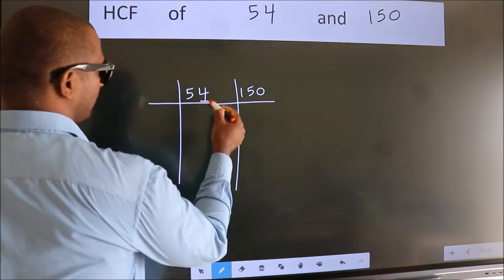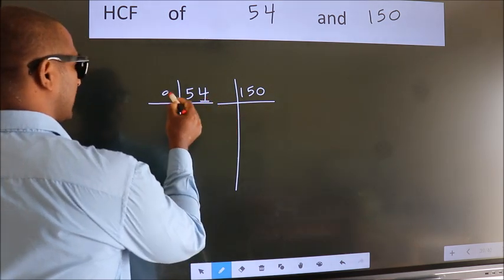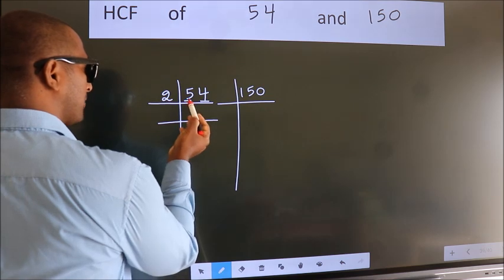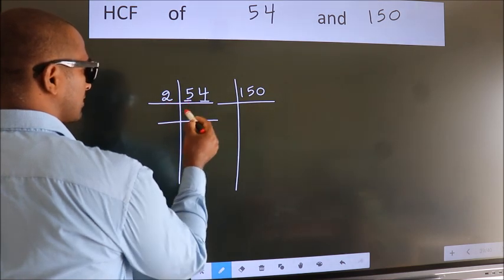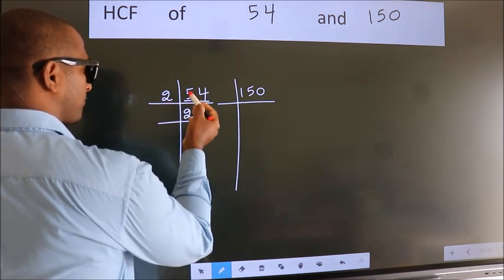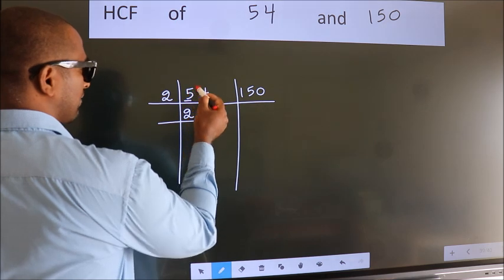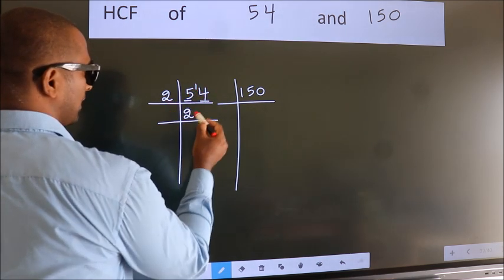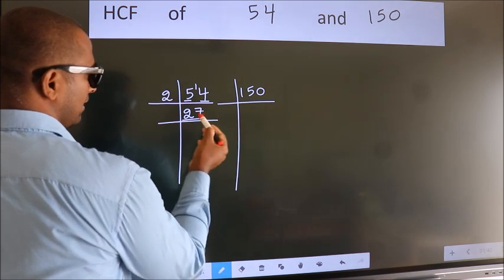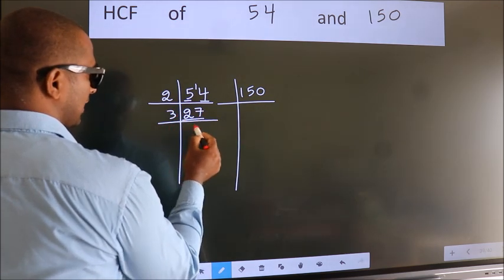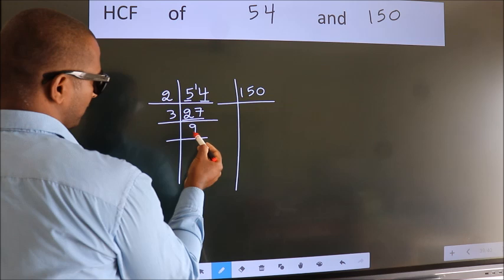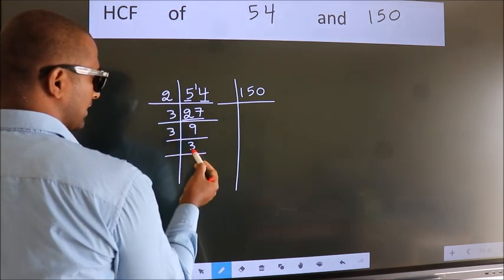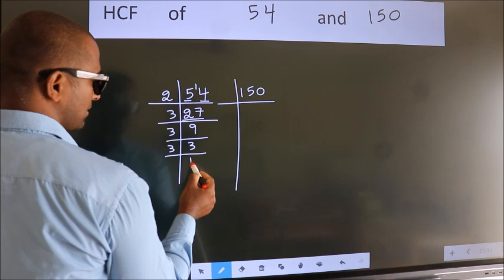Last digit 4, even, so take 2. First number 5. A number close to 5 in 2 table is 2 times 2 is 4. 5 minus 4, 1 carried forward 14. When do we get 14 in 2 table? 2 times 7 is 14. 27 is 3 times 9 is 27. 9 is 3 times 3 is 9. 3 is a prime number, so 3 times 1 is 3.